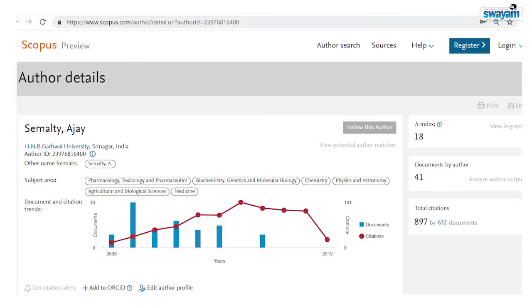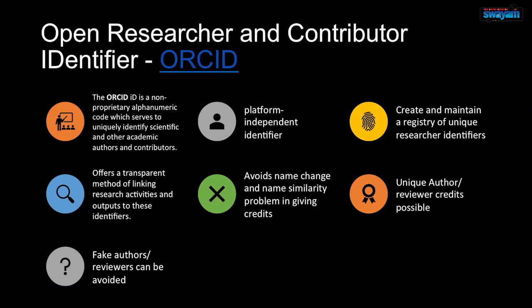The Scopus author preview can be checked freely. Moving to ORCID — Open Researcher and Contributor Identifier — the ORCID ID is a non-proprietary alphanumeric code that uniquely identifies authors and researchers. It is a platform-independent identifier creating and maintaining a registry of unique researcher identifiers. It offers a transparent method of linking research activities and outputs to individuals, avoids name change and name similarity problems, and helps track genuine reviewers while preventing fake authors and reviewers.